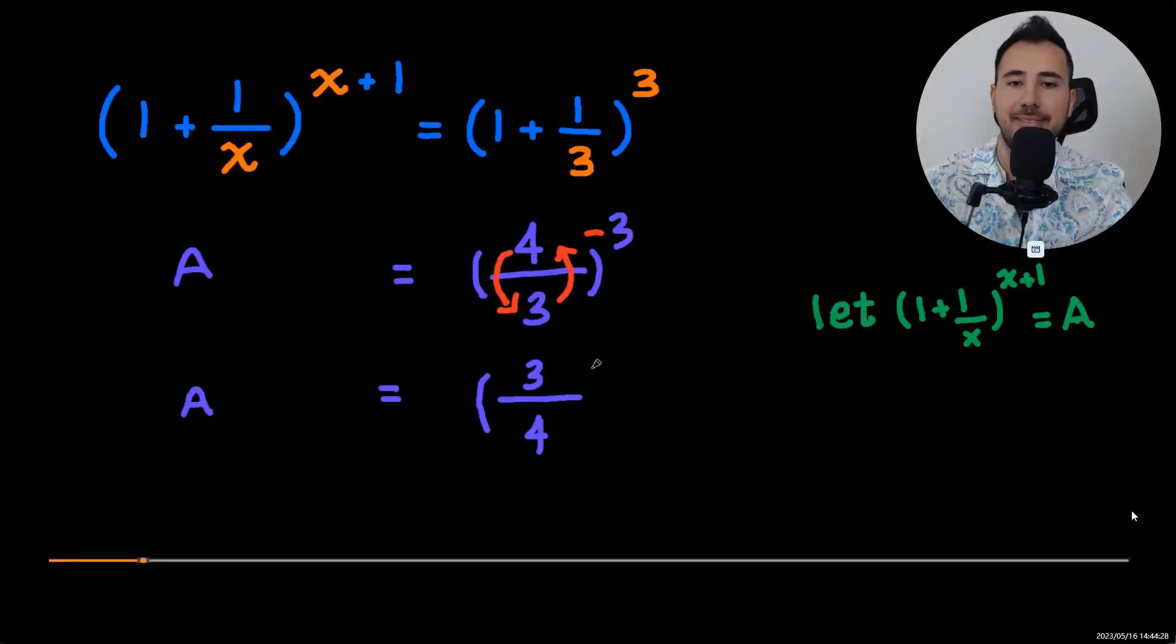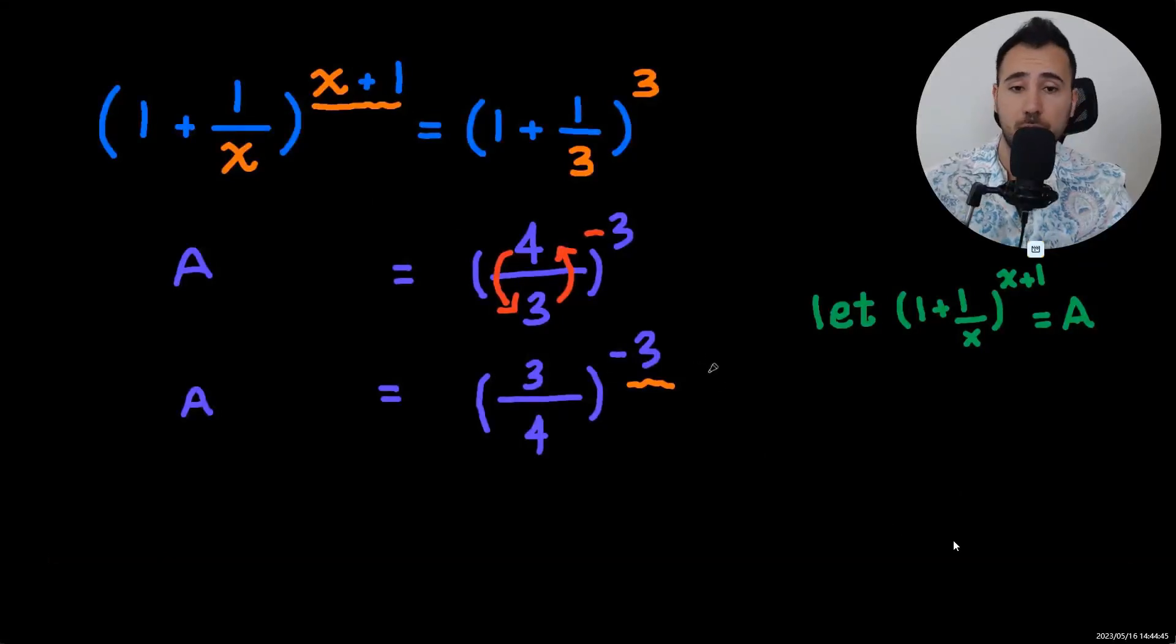And now you see we want this to be the same as this as much as possible. There is a plus one, so negative three we're going to write it as negative four plus one.